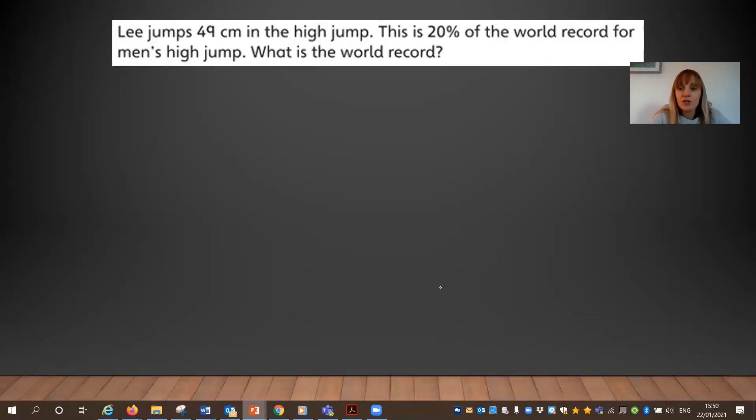Let's have a look at another one then. So Lee jumps 49 centimetres in the high jump. This is 20% of the world record for men's high jump. What is the world record? Now this one's different this time because last time we were looking at 50%, which was a half. Now 20%, can you remember what that was as a fraction of an amount? If you're not too sure, remember the percent always means out of 100. So 20 out of 100. What does that simplify down to? It simplifies down to a fifth.